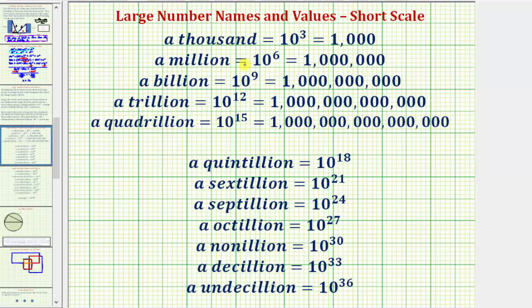Next we have a million, which equals 10 to the sixth, which is one followed by six zeros. A million is 1,000 times larger than 1,000. In fact, every number we see here is going to be 1,000 times larger than the number above it.